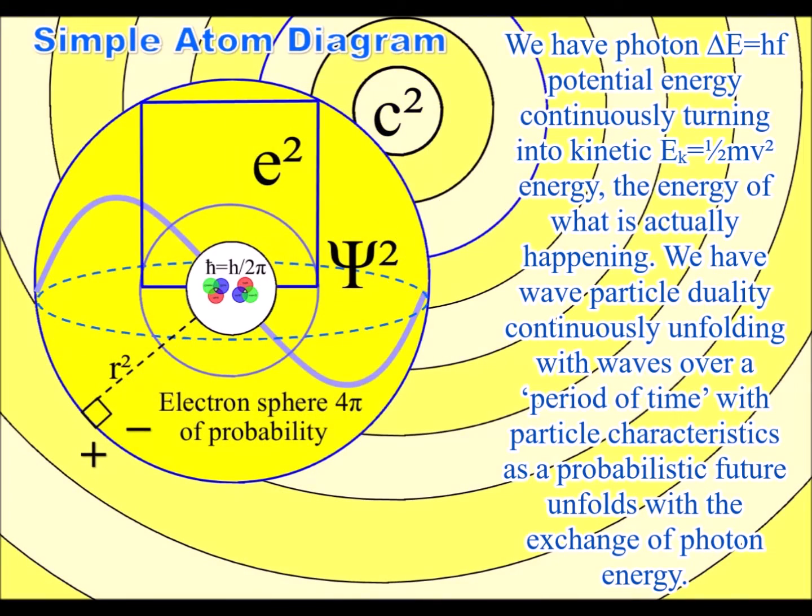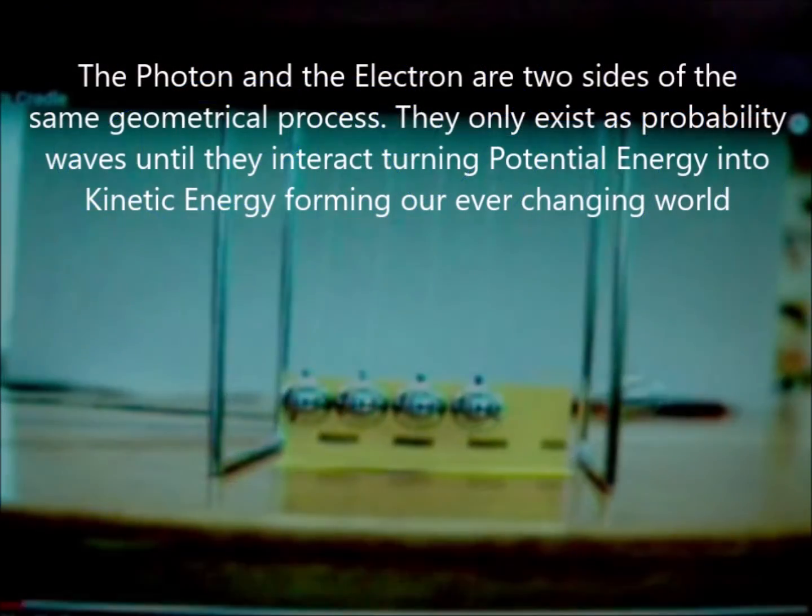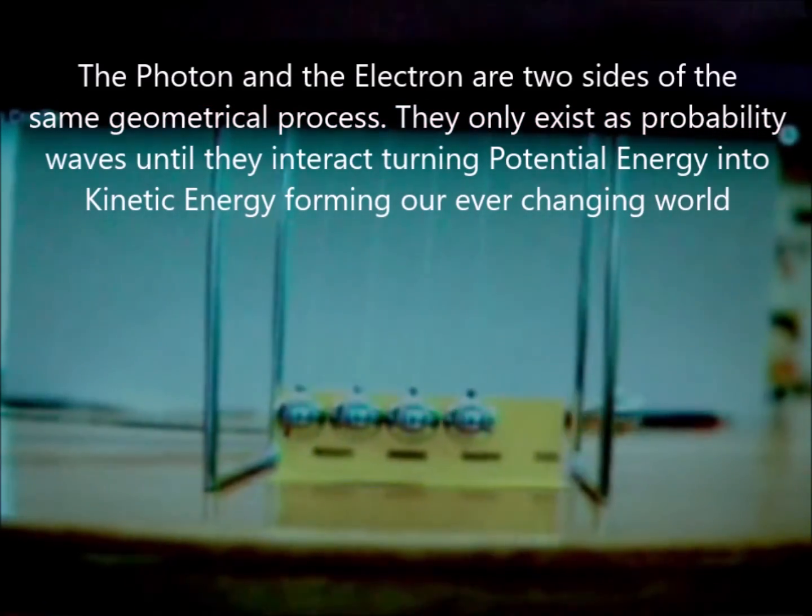Photon energy is continuously transforming potential energy into the kinetic energy of matter, in the form of electrons. Kinetic energy is the energy of what is actually happening, as the future unfolds.